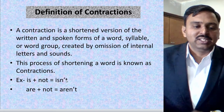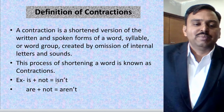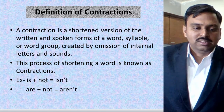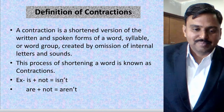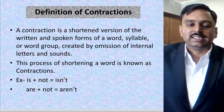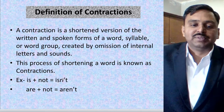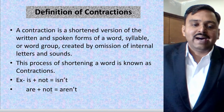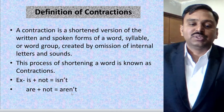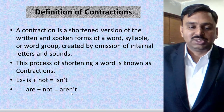For example, 'is not' becomes 'isn't' — N, apostrophe, T. This symbol where my arrow is pointing is called an apostrophe. 'Are not' is the full form; the shortened contraction is 'aren't' — A, R, E, N, apostrophe, T.